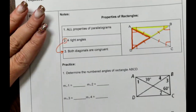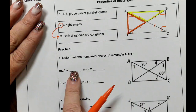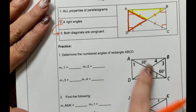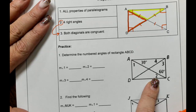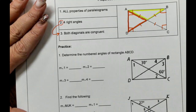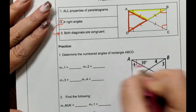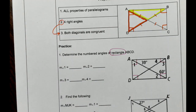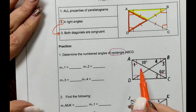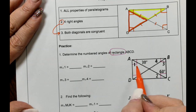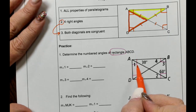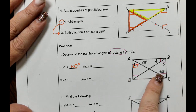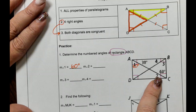Let's determine the numbered angles of rectangle ABCD. The hardest part is that we often stare at it and notice that angle 2 and angle 3 are alternate interior angles — which is correct — but we overlook the obvious: since it's a rectangle, all corners are right angles. Mark those corners immediately. If this angle is 30° and it's complementary to the right angle, then angle 1 is 60°.